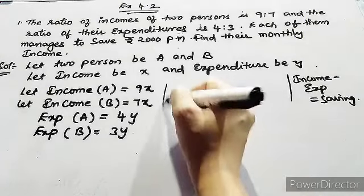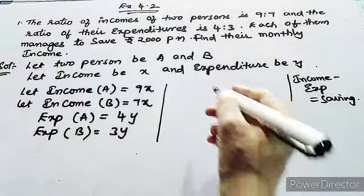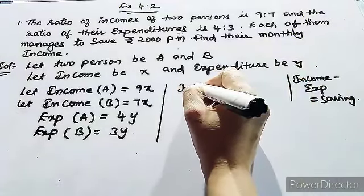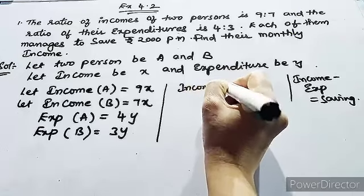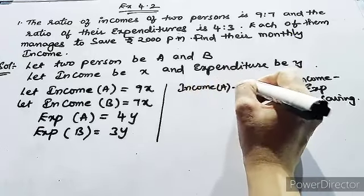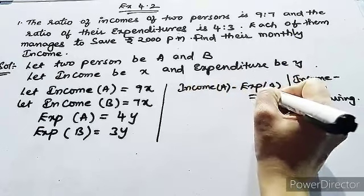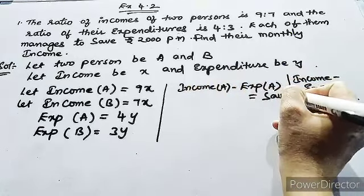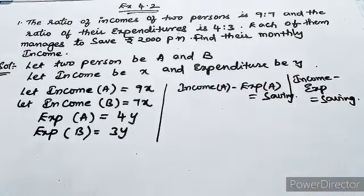how will you formulate? What I said - income of A minus expenditure of A you will get as saving. This equation you will form. Just note it down because the board is smaller so we can proceed further.